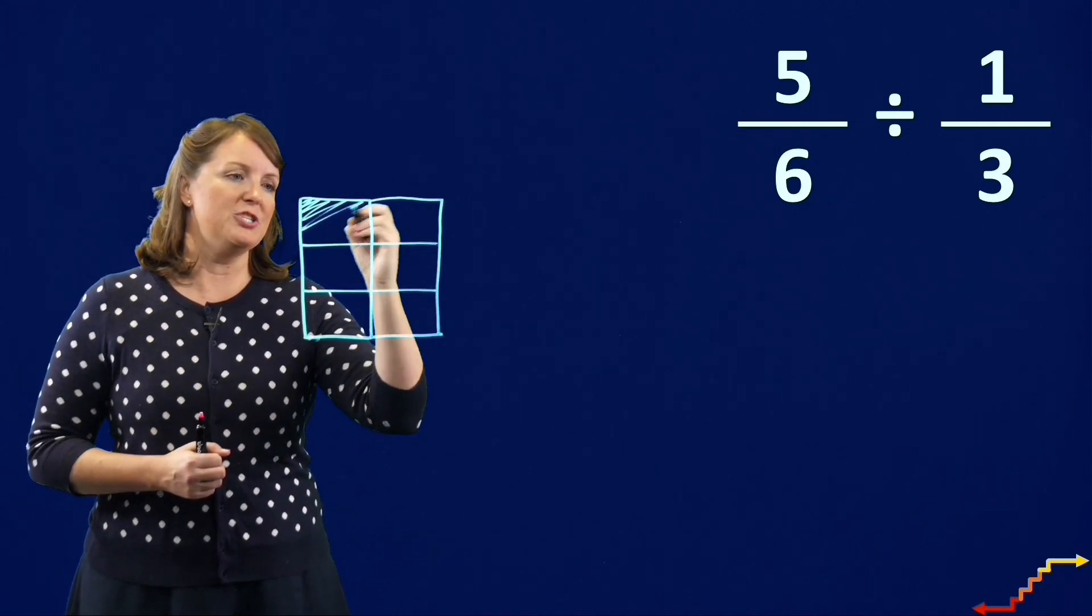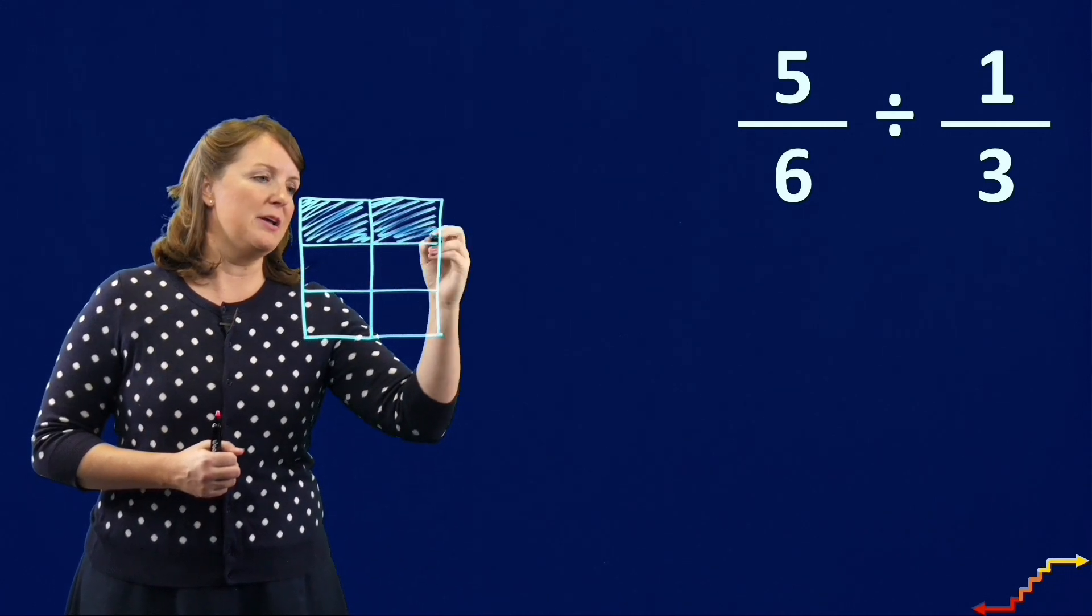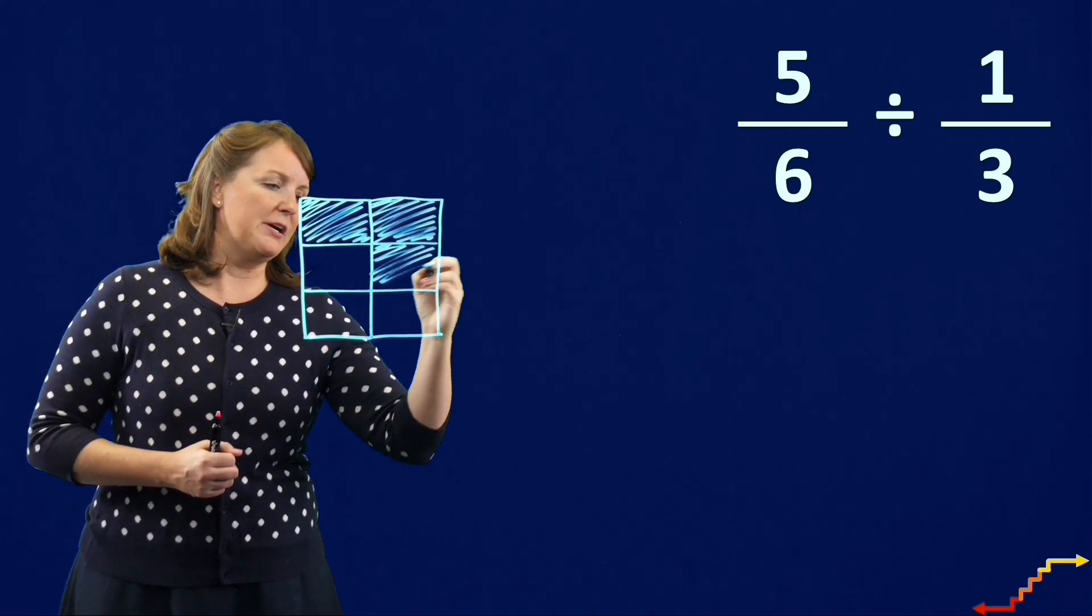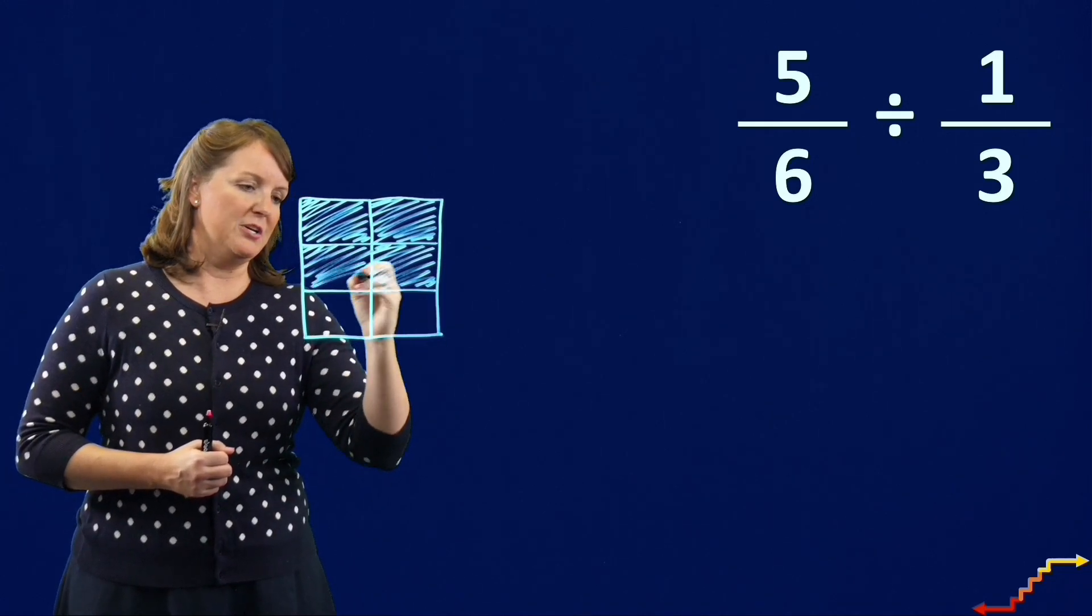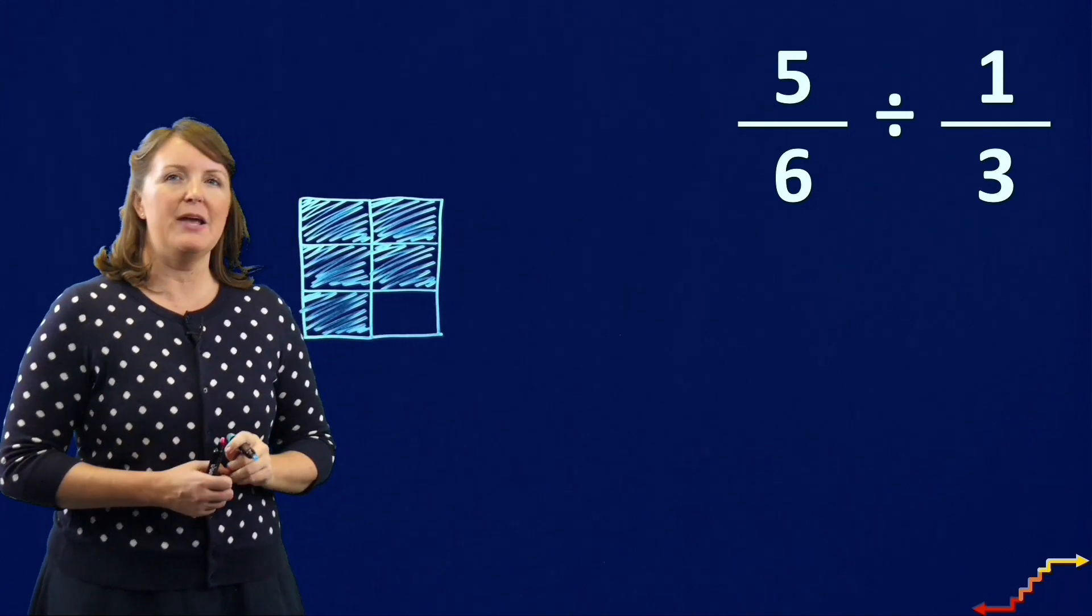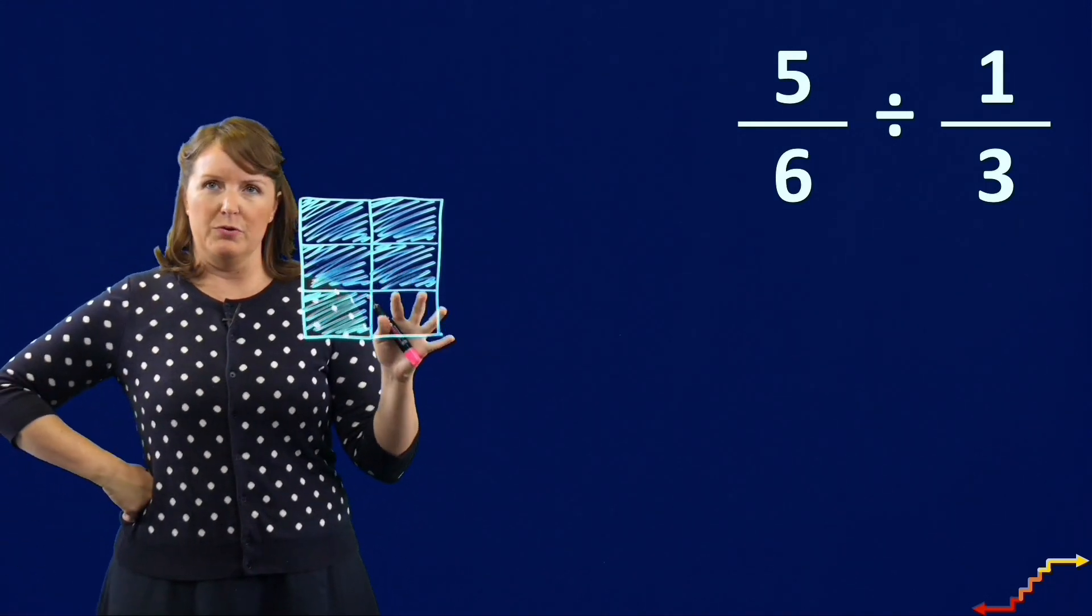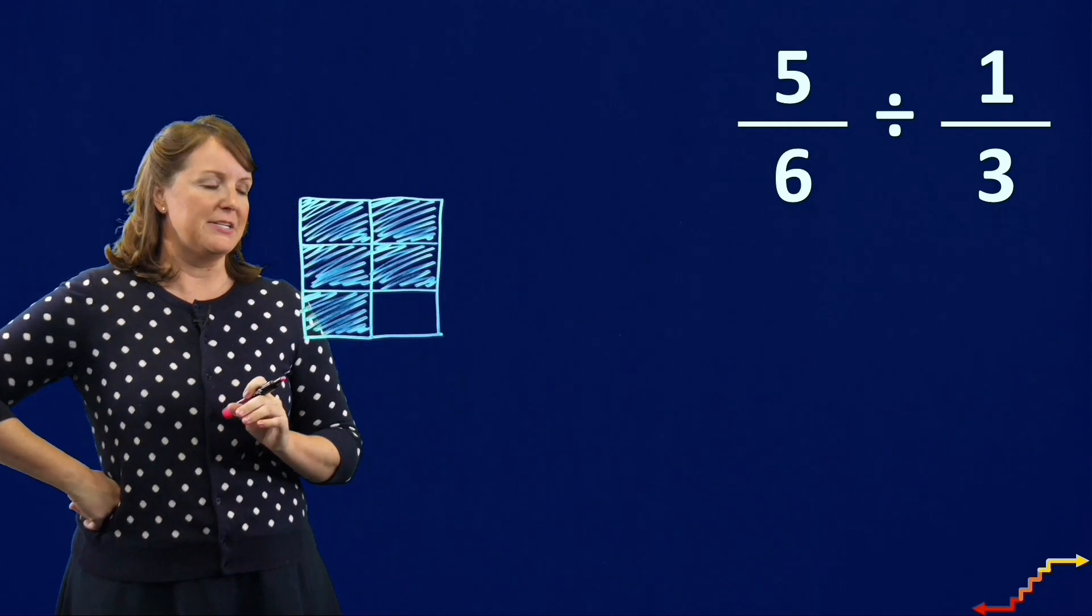So I'm going to go ahead and shade five of those six parts. And I'm going to just shade them quickly here so I can get to doing my division. So we have five-sixths.